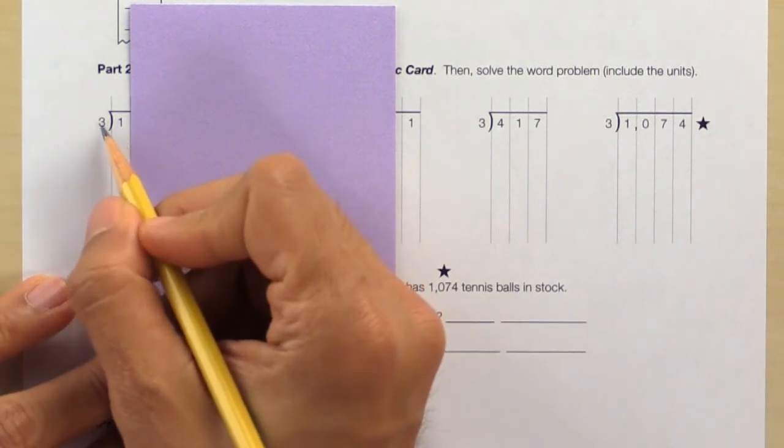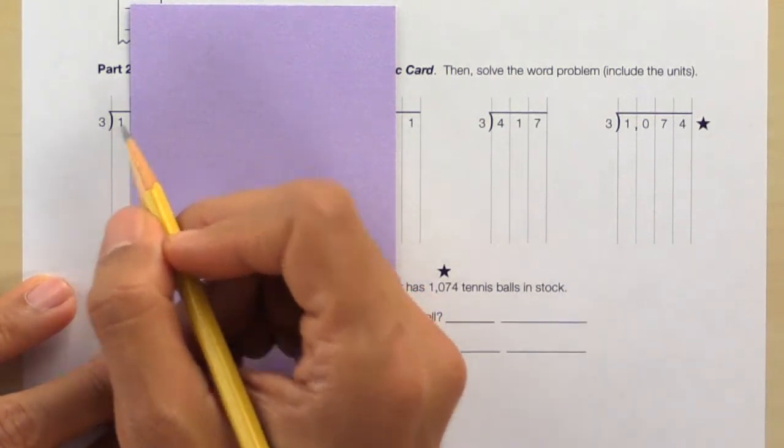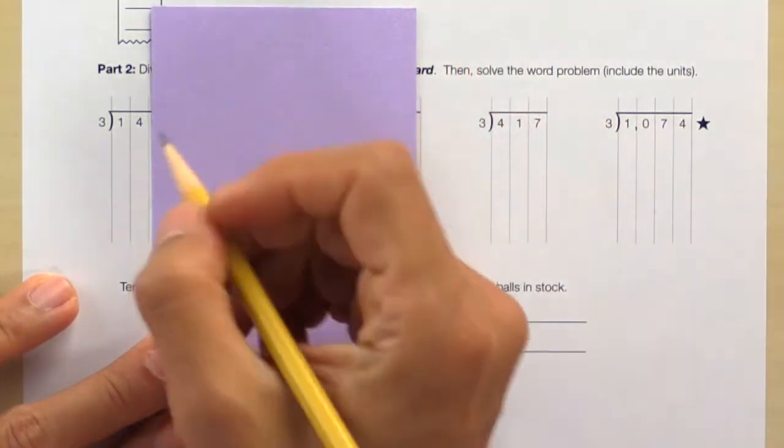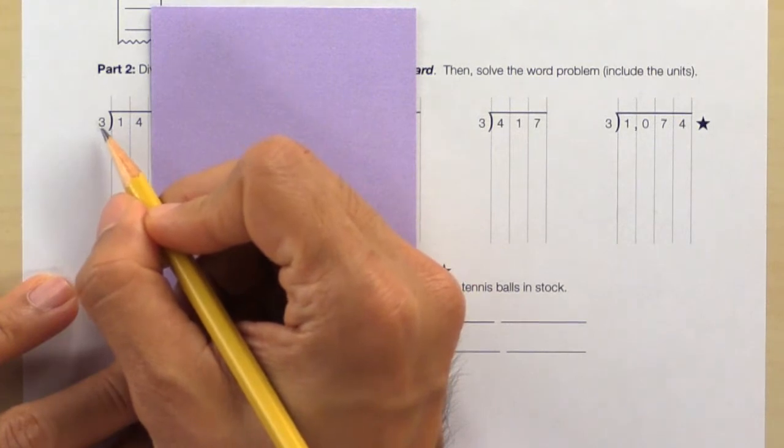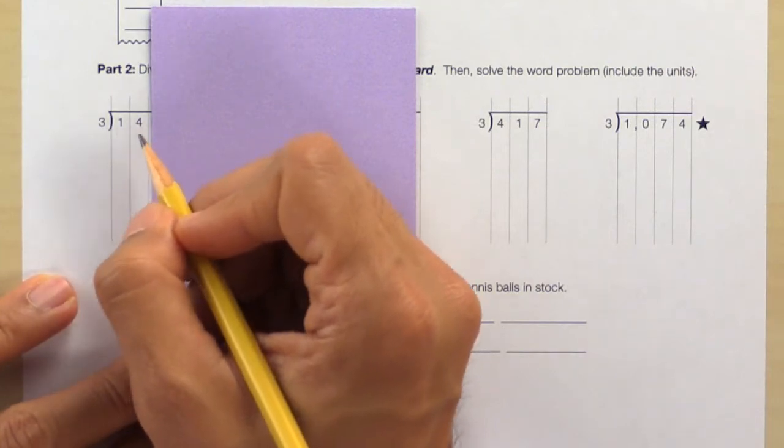1 divided by 3. Since 1 is smaller than 3, we can go ahead and slide the card over one more time. 14 divided by 3, will that work evenly? No, so count backwards. 13 divided by 3? No. 12...